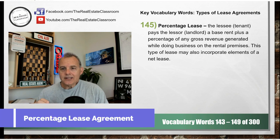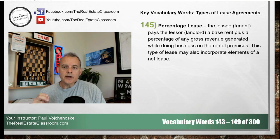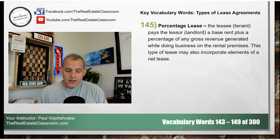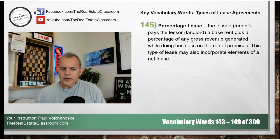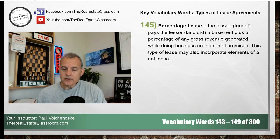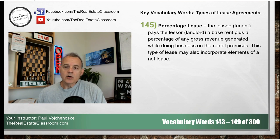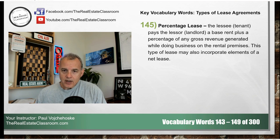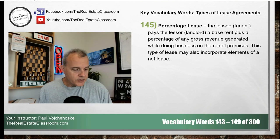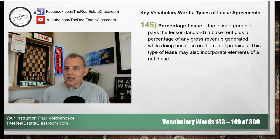Number 145 is a percentage lease. A percentage lease is where the lessee pays the lessor a base rent — monthly or periodic, whether quarterly or annual. The tenant pays the landlord a base rent plus a certain percentage of the gross revenue that the business generates in that property. This type of lease can also incorporate certain elements of a net lease.